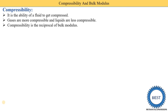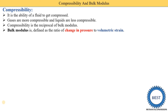Compressibility is the reciprocal of bulk modulus, meaning compressibility equals one divided by bulk modulus. Bulk modulus is denoted by K and is defined as the ratio of change in pressure to volumetric strain.